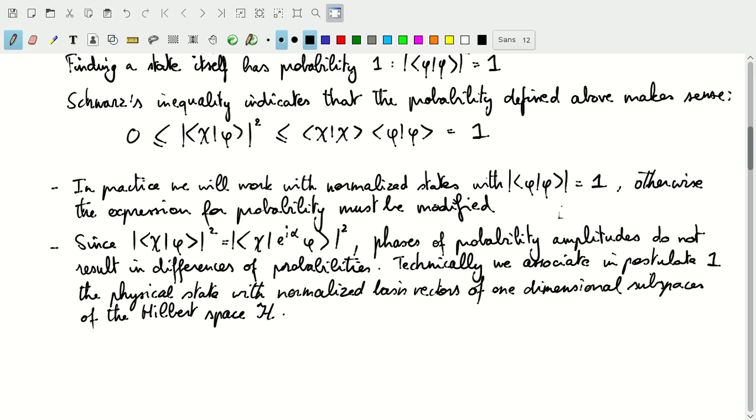Technically, we could say that in postulate one, we're actually describing the physical state of a quantum system not with just a single element of a vector space, but with the normalized basis vectors of one-dimensional subspaces of that Hilbert space. And that's what we've previously called rays of that vector space, so these one-dimensional subspaces. Any normalized basis vector of those rays corresponds to a physical system.